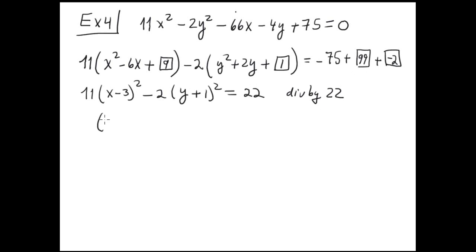Divide the entire equation by 22. We have (X minus 3) squared divided by 2, minus (Y plus 1) squared divided by 11, equals 1.